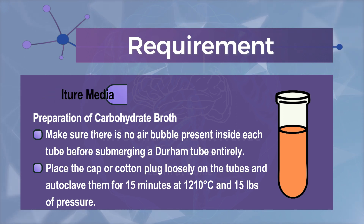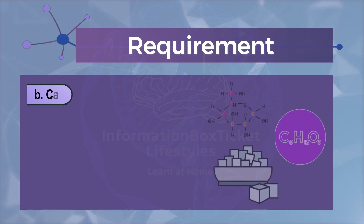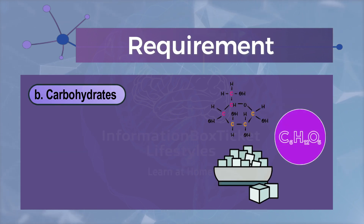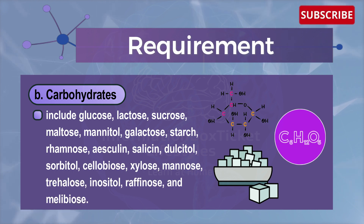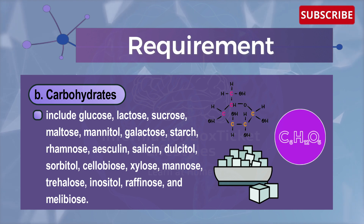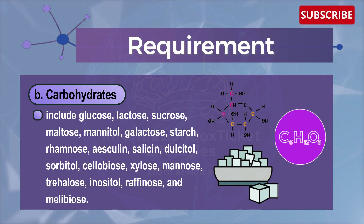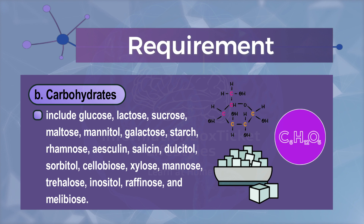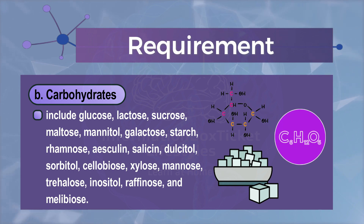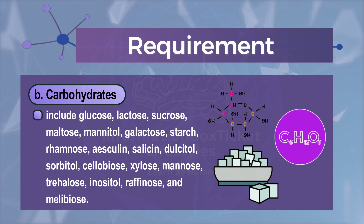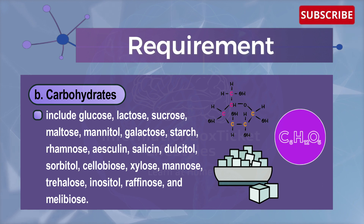Place the cap or cotton plug loosely on the tubes and autoclave them for 15 minutes at 121 degrees Celsius and 15 pounds of pressure. Commonly used carbohydrates as substrates in the carbohydrate fermentation test include: glucose, lactose, sucrose, maltose, mannitol, starch, rhamnose, esculin, salicin, dulcitol, sorbitol, cellobiose, xylose, mannose, trehalose, inositol, raffinose, and melibiose.